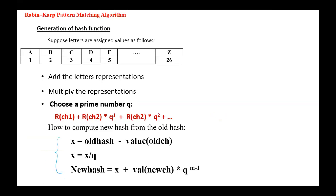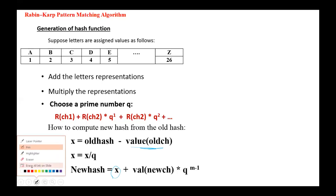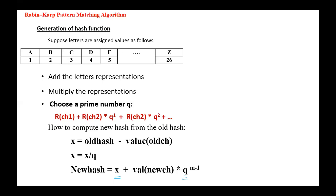Here are the steps to generate the new hash from the old hash. We first subtract the value of the old character from the old hash and divide the result by Q. Then the new hash equals that result added with the value of the new character multiplied by Q to the power m minus 1.